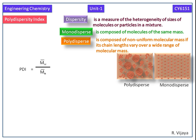For monodispersity, weight average molecular mass is equal to number average molecular mass. So PDI value is equal to 1. Examples are all natural polymers.